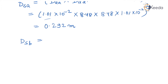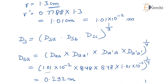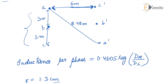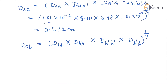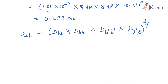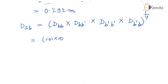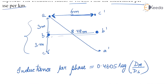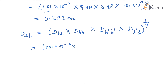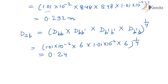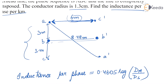Now we have to calculate DSb. DSb equals (D_b-b' × D_b'-b to the power 1 by 4). Here, B-B' distance is 6, and the effective r' is 1.01 × 10⁻² metres. So DSb equals (6 × 1.01 × 10⁻² × 6 × 1.01 × 10⁻²) to the power 1 by 4, which equals 0.246 metres.